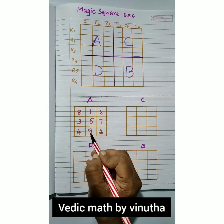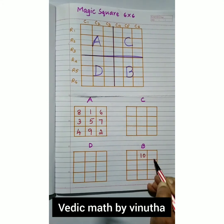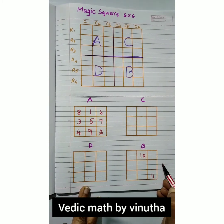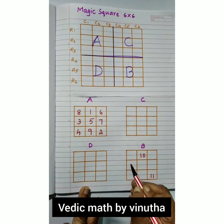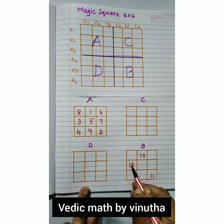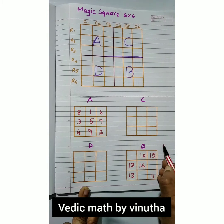The continuation number 10 goes to box B. Move diagonally for 11, then go to the column end. Moving diagonally again, go to the row end — that is 12. For 13, it would go here but that box is already filled, so go just right below 12 to place 13.